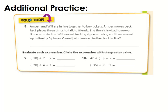So for 8, Amber and Will are in line together to buy tickets. Amber moves back by three spaces three times. She then is invited to move five places up in line. Will moved back four places twice, then moved up in line by three places. Overall, who moved further back in line? So we actually need two different problems or two different expressions. We need Amber's and we need Will's.